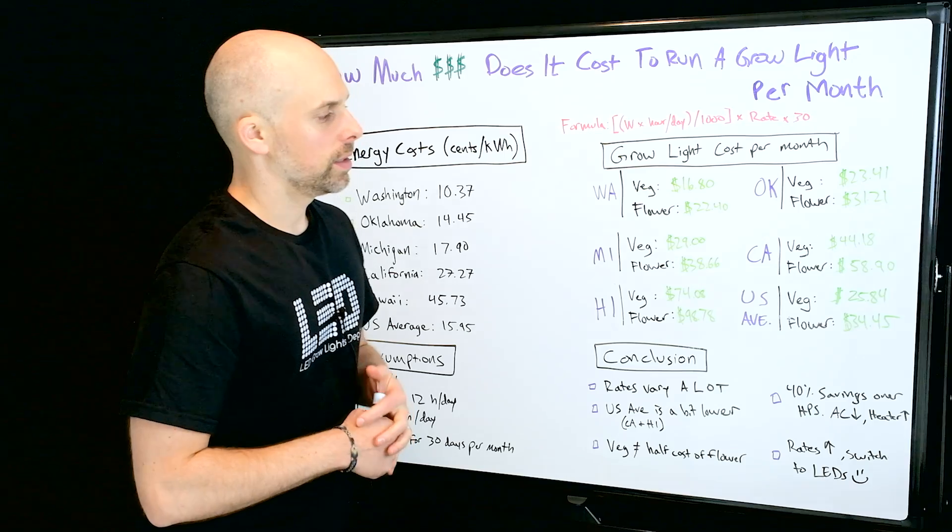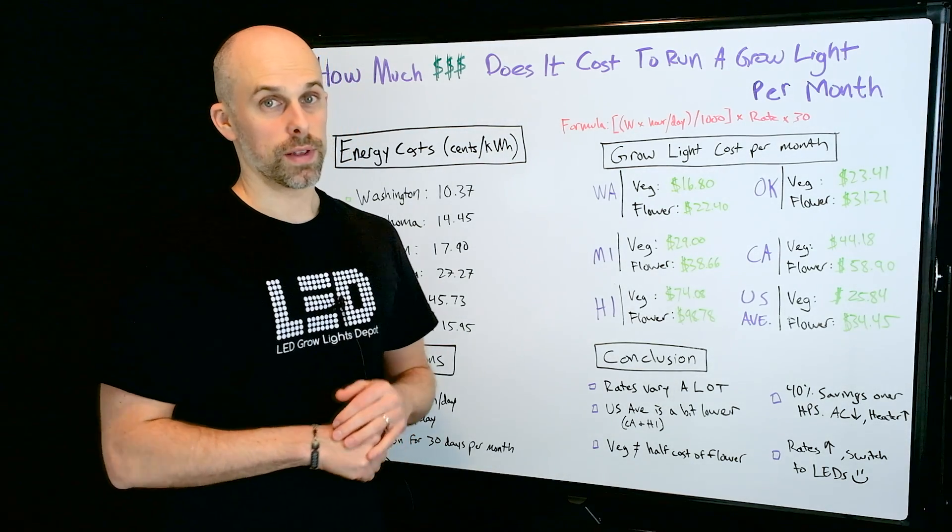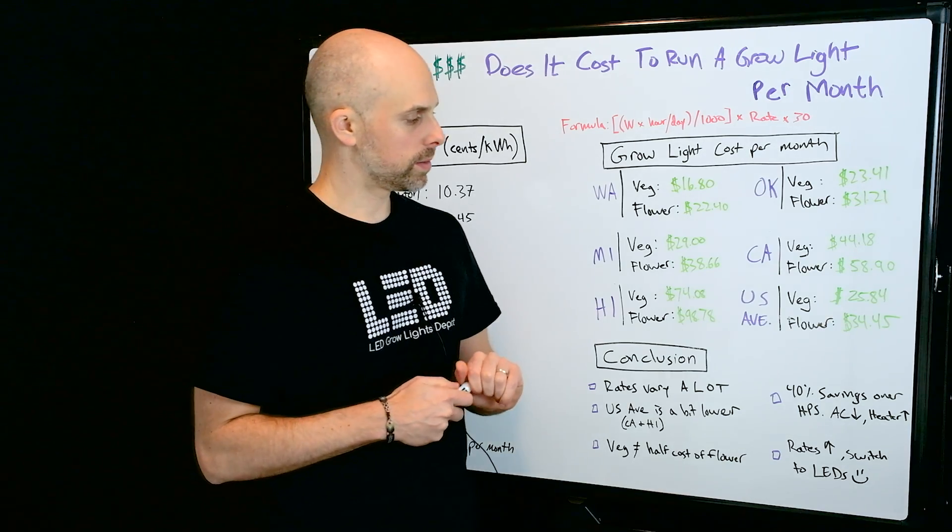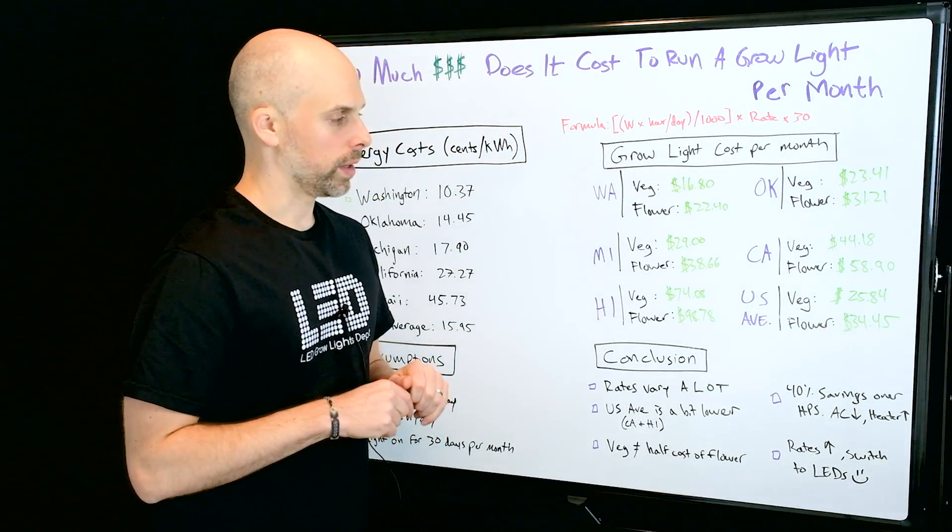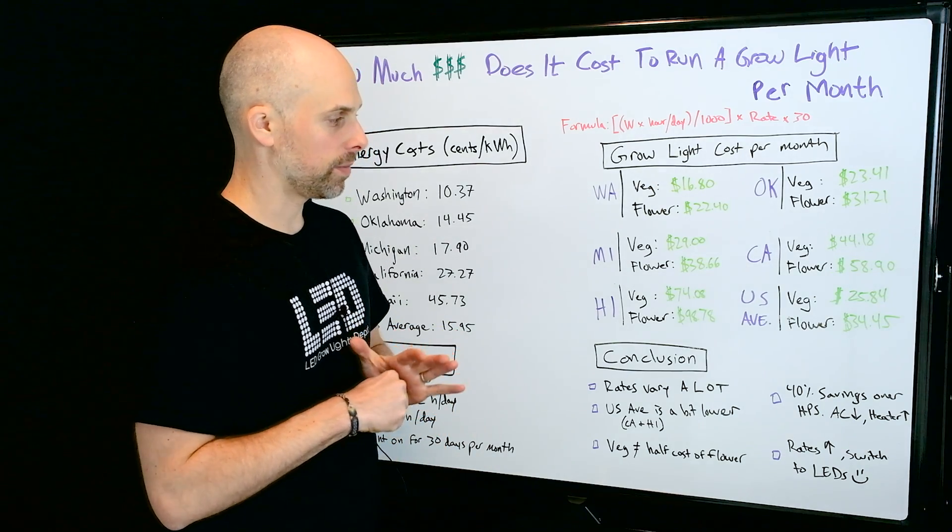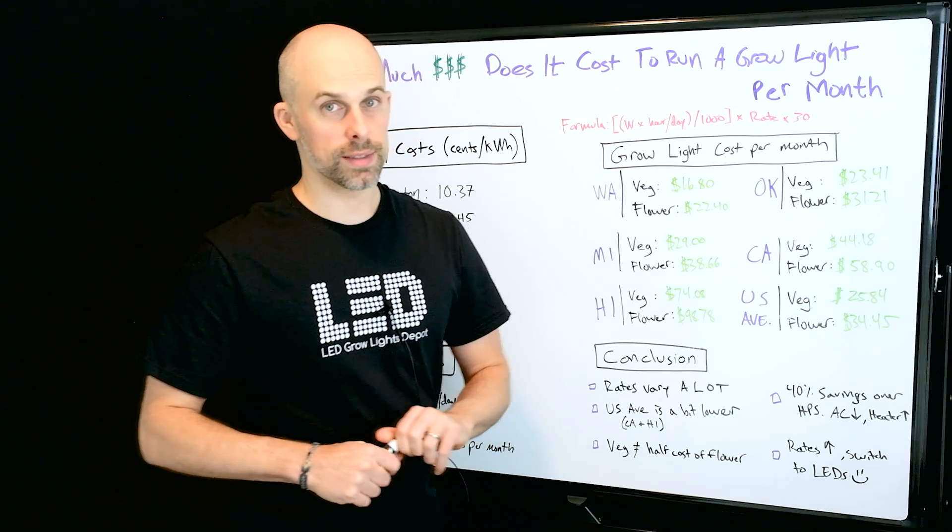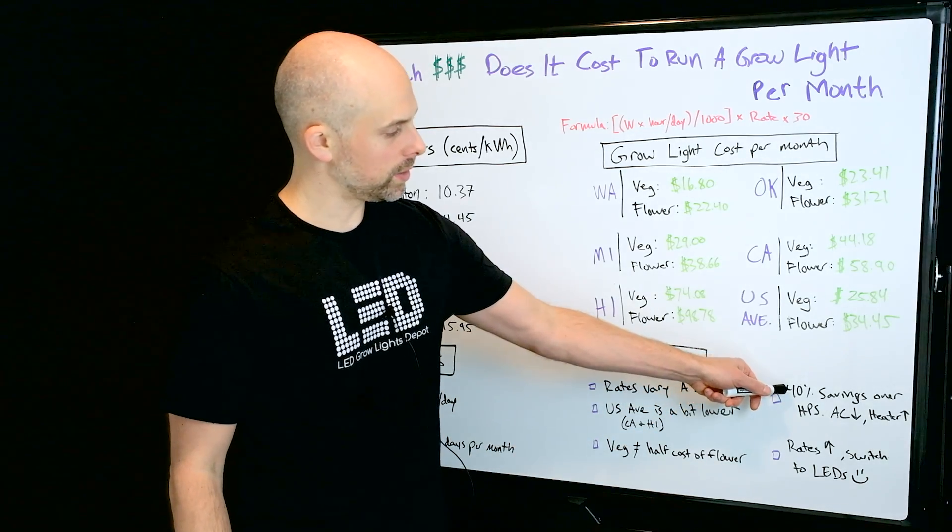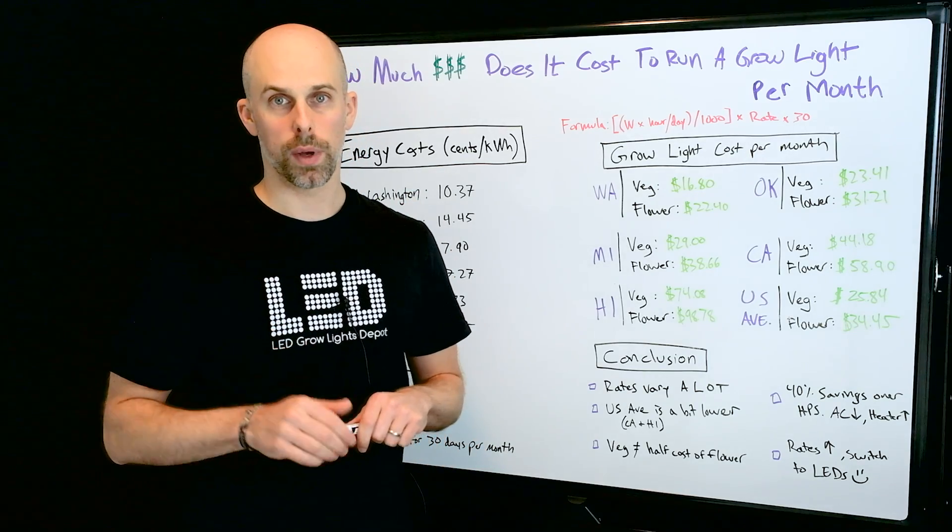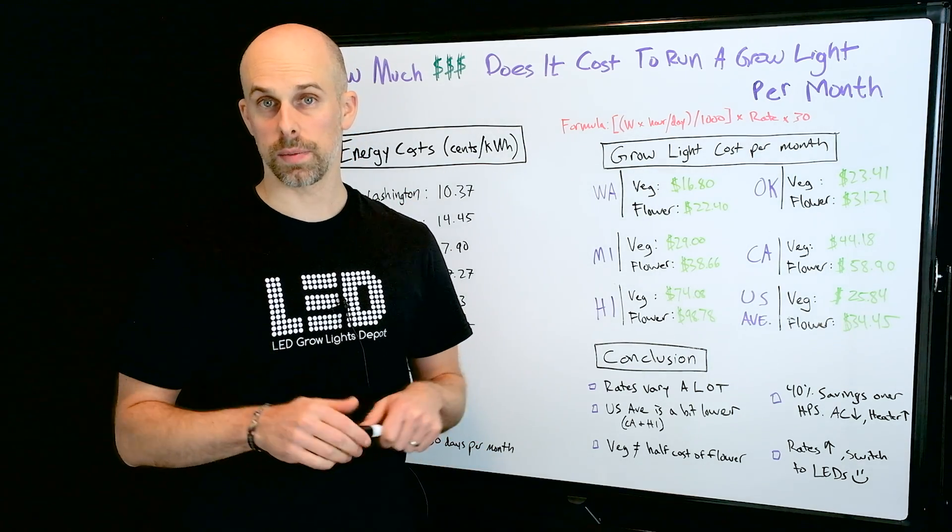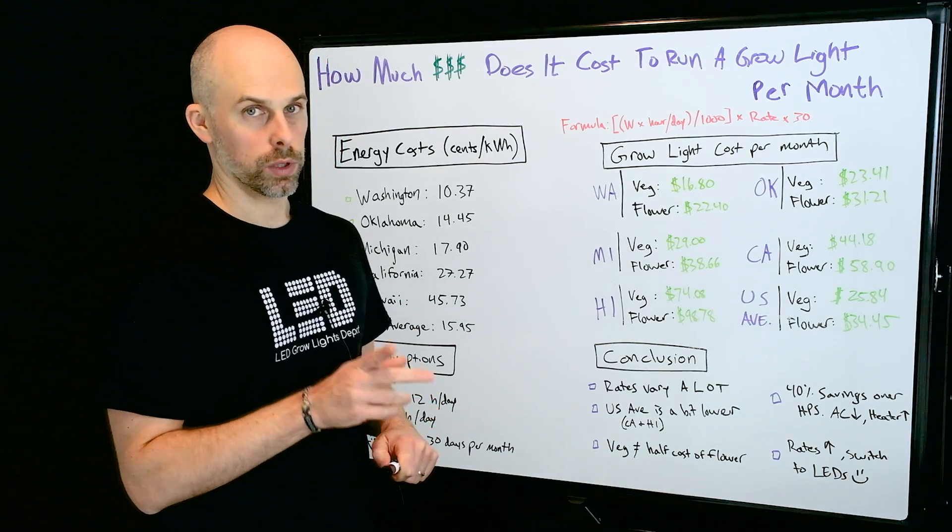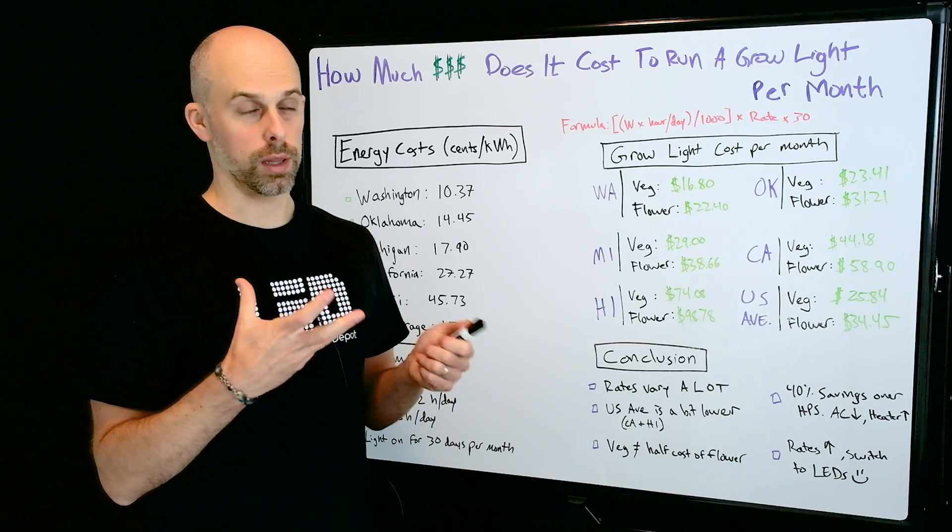And with LEDs, you're going to see about a 40% savings over HPS. So in this assumption, the lights are drawing 600 watts, whereas with an HPS light you're drawing right around 1000 watts, so about 40% savings. And with LEDs you're going to be using less AC, so that savings might increase. But in some cases it might decrease because you might be using a heater, say you're growing in a cool room like a basement or a cool back room, which you might not need with an HPS that runs hotter than LEDs.